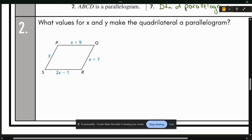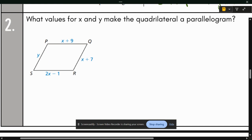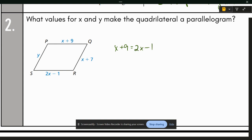So now for the good stuff. Using algebra in order to solve. So what values for X and Y make the quadrilateral a parallelogram? If you remember, parallelograms have to have congruent sides. So if we were solving for X, we could take PQ and set it equal to SR. Or X plus 9 equal to 2X minus 1. Solve. Subtract X. You get 9 is equal to X minus 1. Add 1. And X is equal to 10.